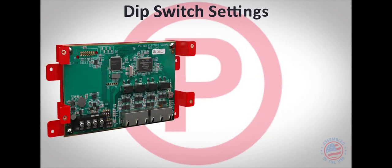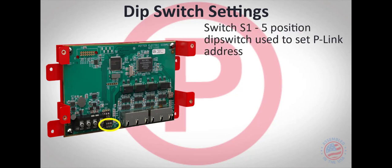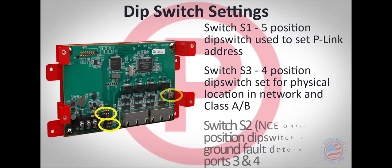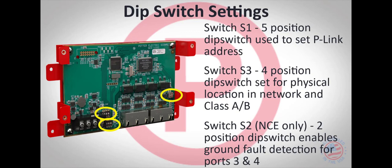The NCE and NCF network cards contain several DIP switches that need to be set prior to installation. Switch S1 is used to set the P-Link address for the particular card. Switch S3 is set according to the card's physical location in the network and its Class A or B configuration. Switch S2 is only available on the NCE-1000 and is used to set ground fault transient protection for ports 3 and 4.